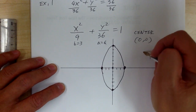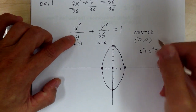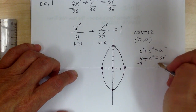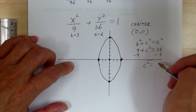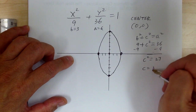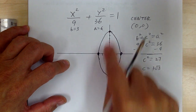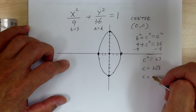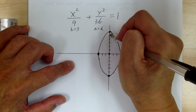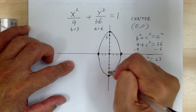Use the Pythagorean theorem: b squared plus c squared equals a squared. So 9 plus c squared equals 36. Subtract 9 from both sides: c squared equals 27. So c equals 3 square root of 3. When you label, use this exact value, but to locate the focus you can use the approximation, which is about 5.1. So counting from center: 1, 2, 3, 4, 5 — about here is F1, and going the other way is F2.